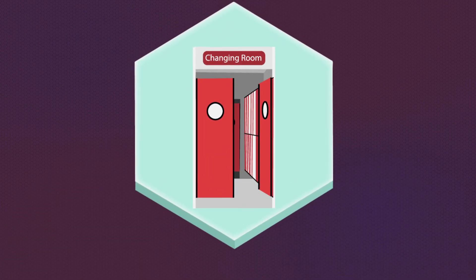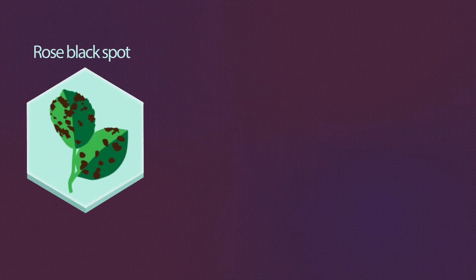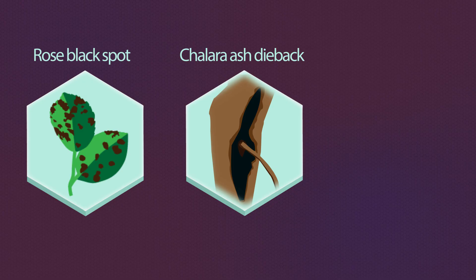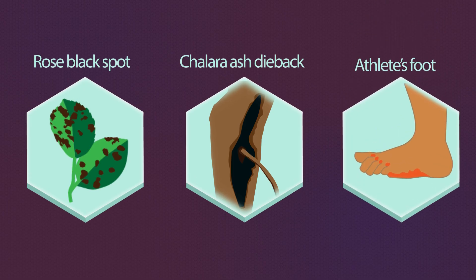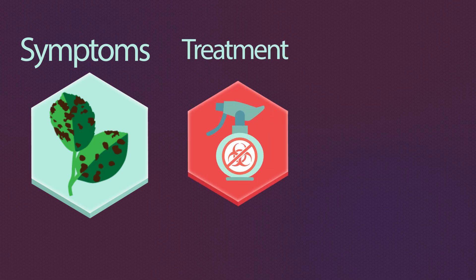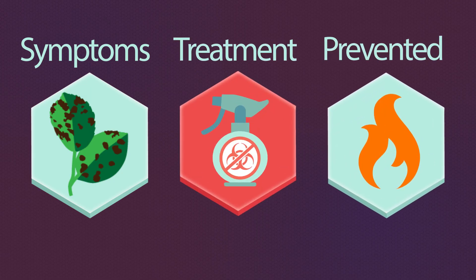In this video we have looked at how fungi can cause diseases such as rose black spot, Chalara ash dieback and athlete's foot. We have discussed symptoms of these diseases, how they are treated and how the spread of the disease can be prevented.